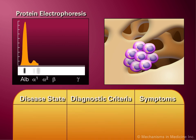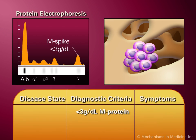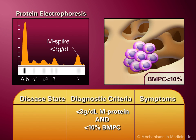If the M-protein is lower than 3 grams per deciliter and the bone marrow contains fewer than 10% plasma cells, then a diagnosis of MGUS is conferred.